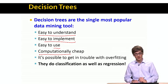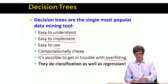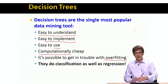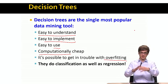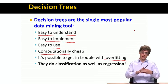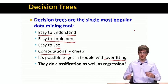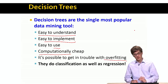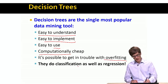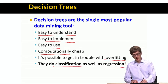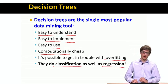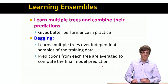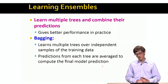One caveat with decision trees is that it's very easy to overfit. It's very easy to create complicated trees that are very deep and become too intricate and don't generalize well to unseen data. What is also nice about decision trees is that they can do both classification as well as regression. So decision trees have many good properties.